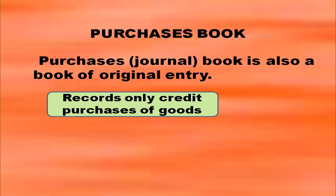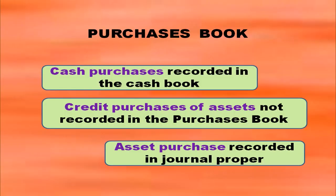Coming to the first type of special purpose book, that is the purchases book. Purchases book is a book of original entry and in this book we will record only credit purchases of goods. Cash purchases are recorded in the cash book, so they are not recorded in the purchases book. Credit purchase of assets are not recorded in the purchases book either. Asset purchases are recorded in the journal proper.